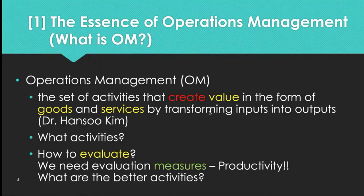In operations, we typically use productivity, defined as output over input. For example, if you took six classes and got a 4.0 GPA, we say you have been very productive. Or finishing both undergraduate and graduate school in four years — that's very productive. However, we can also measure value through quality. Taking classes and getting good GPAs does not necessarily mean you really learned something important.